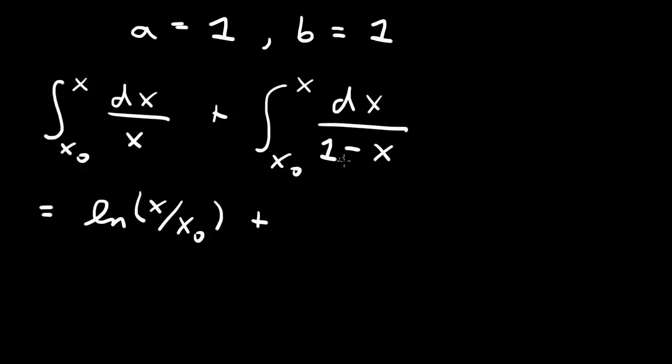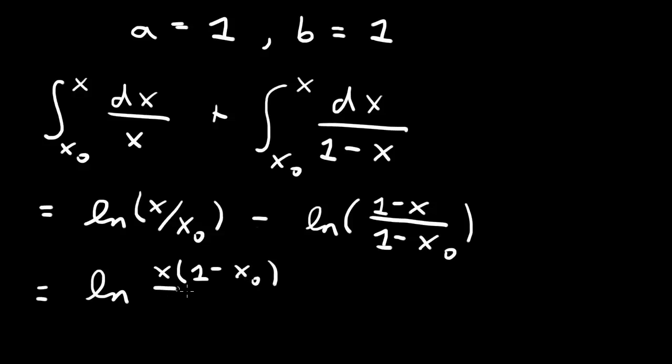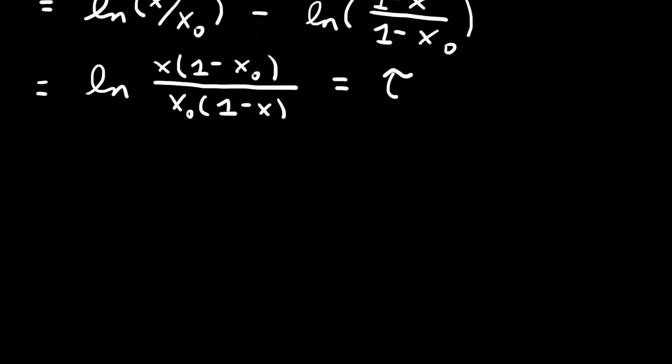This second one is also a log, but because there's a minus x here, it's minus log(1 minus x). So we get a minus log(1 minus x) from the upper limit over (1 minus x₀) from the lower limit. We can combine these two, so this becomes log of x times (1 minus x₀) over x₀ times (1 minus x) using the properties of logarithms. And remember, this was equal to the integral of dτ, so this was just equal to τ.